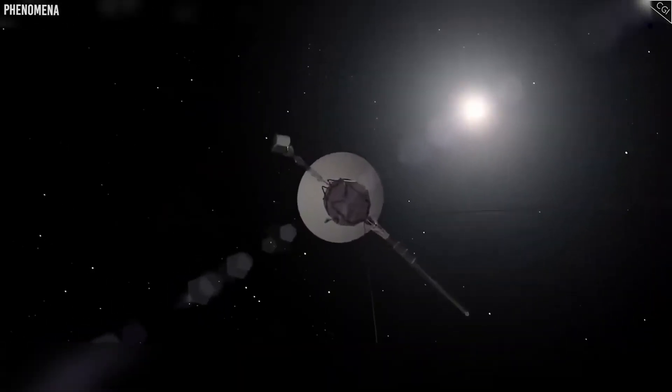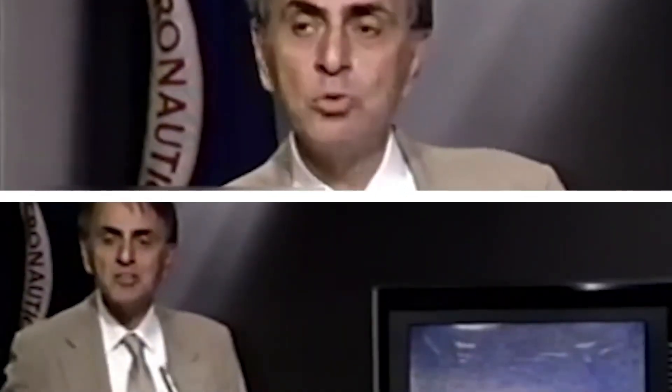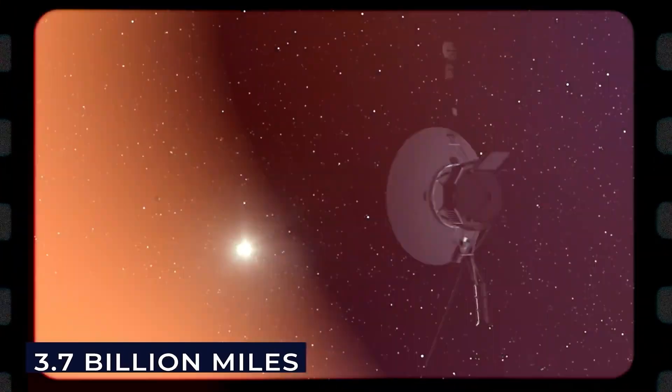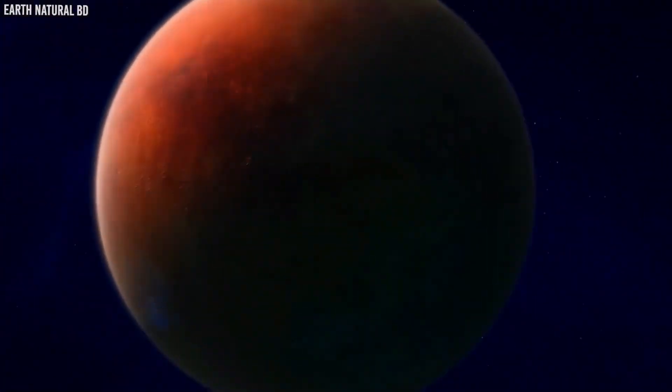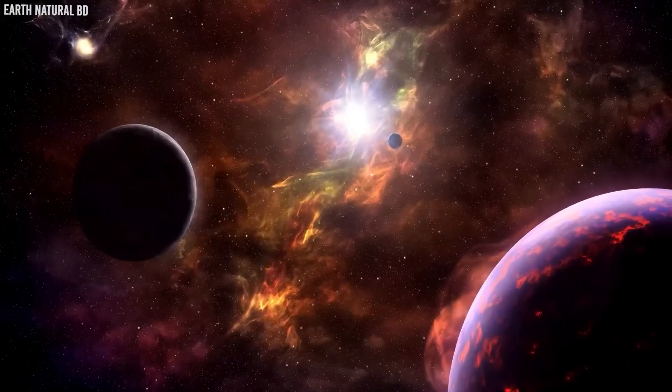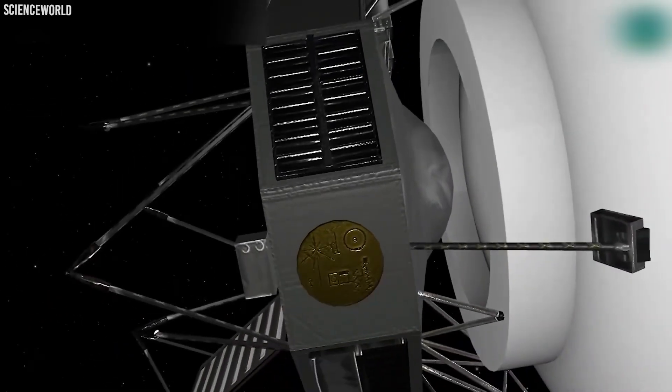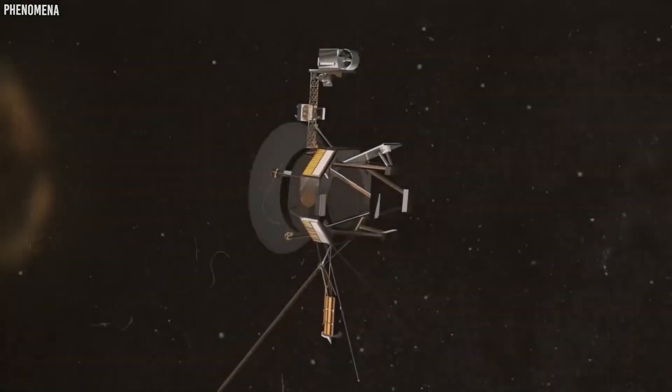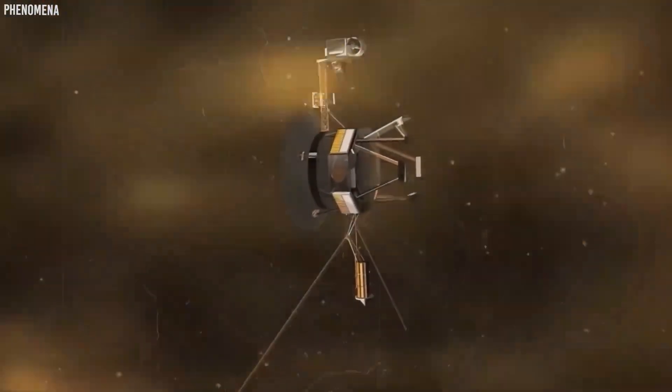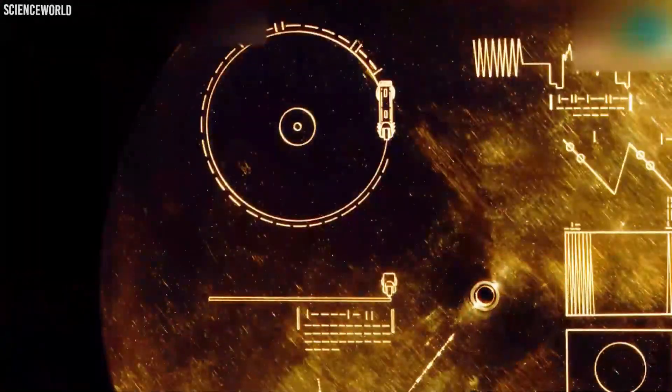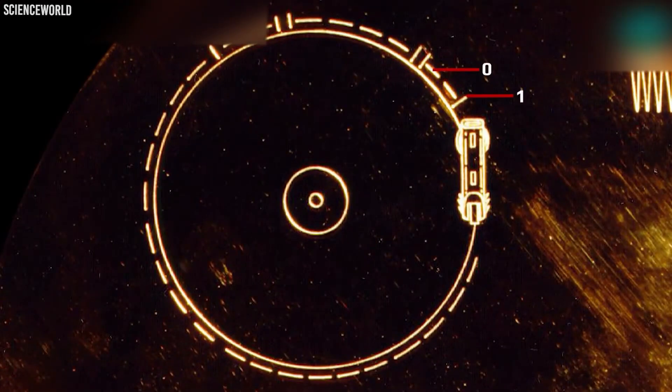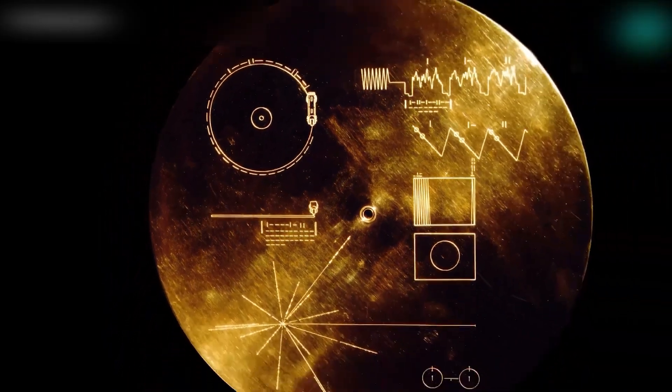Voyager 1's journey through our solar system was nothing short of spectacular. After a cruise of about 18 months, it made its closest approach to Jupiter in March 1979. What it saw there transformed our understanding of the giant planet. Jupiter through Earth-based telescopes had always been a pretty but simple-looking object, a striped ball with a mysterious red spot. Through Voyager's eyes, Jupiter became a world of stunning complexity. The Great Red Spot was revealed as a massive storm system that could swallow three Earths.